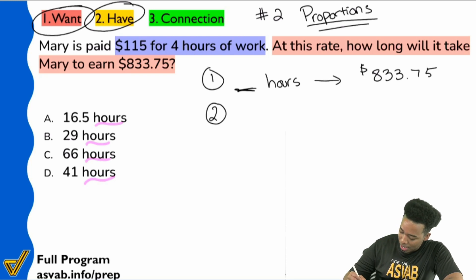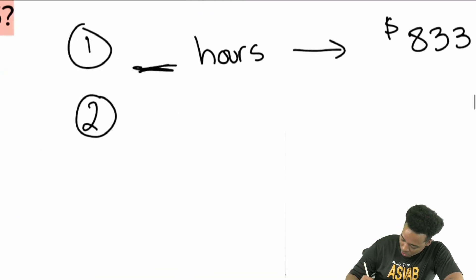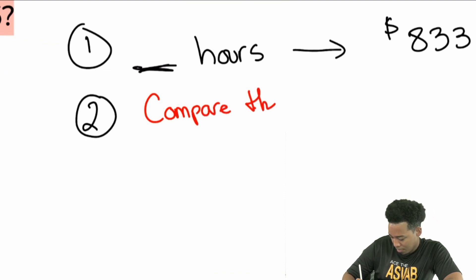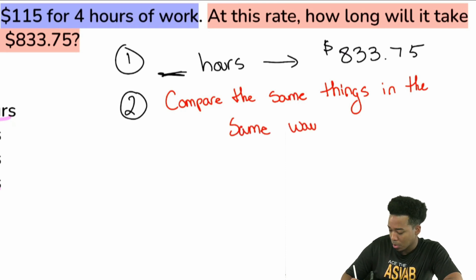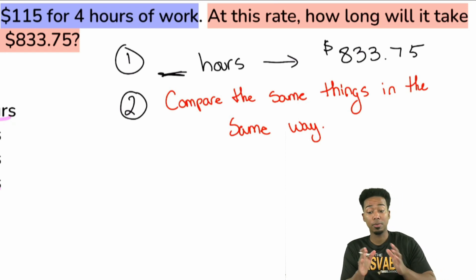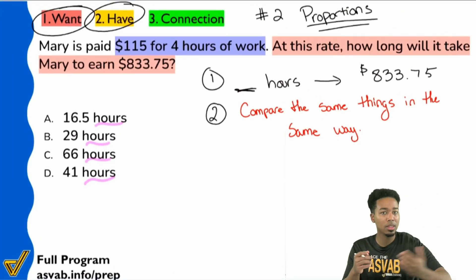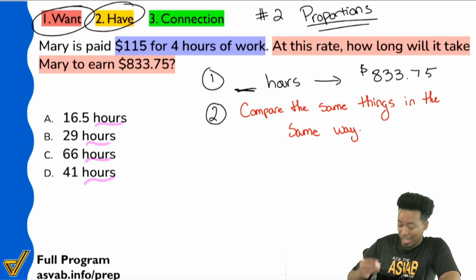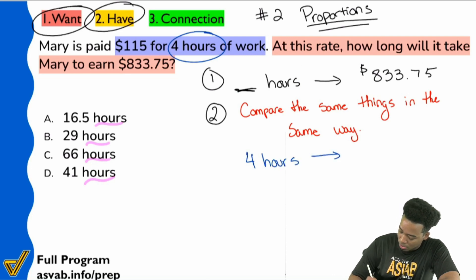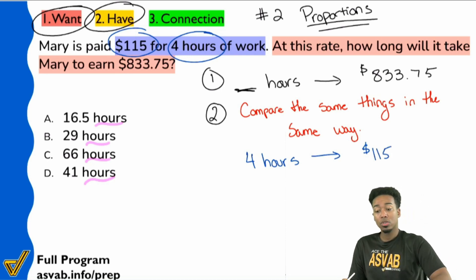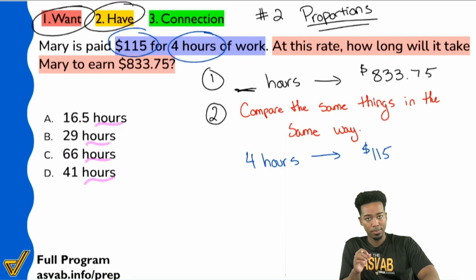So again, do yourself a favor, write this down: compare the same things in the same way, right here, nice and easy. So as long as we respect this main idea, we're going to be fine, my party people. And I'm going to show you how this applies. And again, if you want to learn more about this, unit two is what you want to write down in the arithmetic reasoning course that we have.